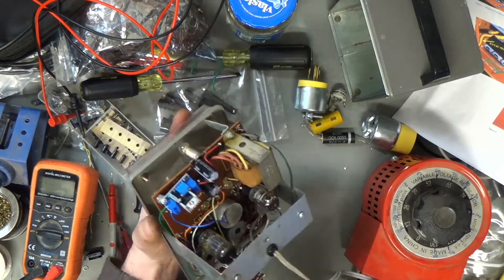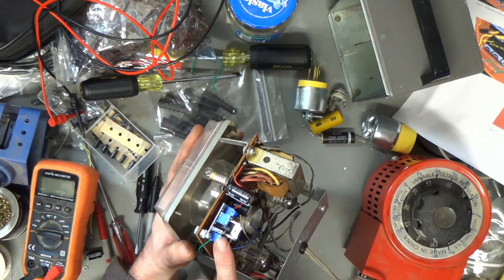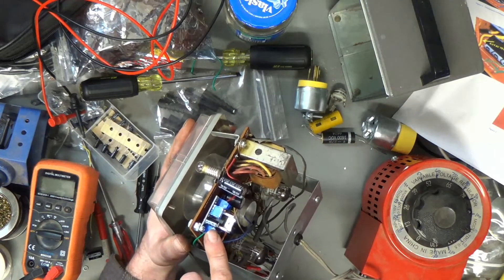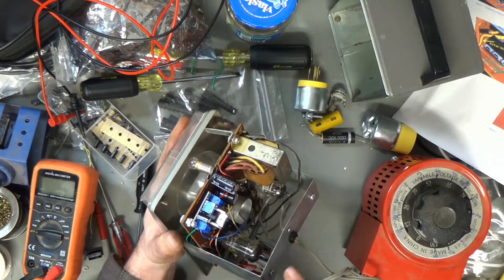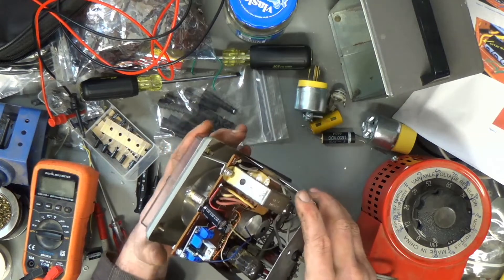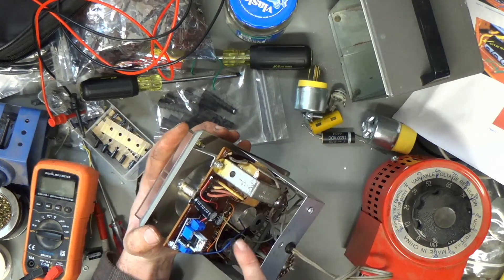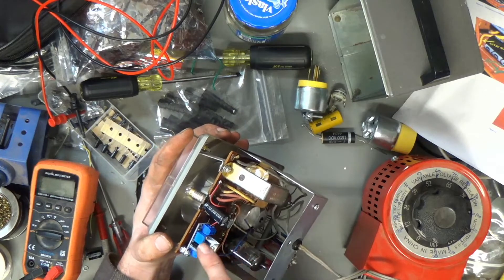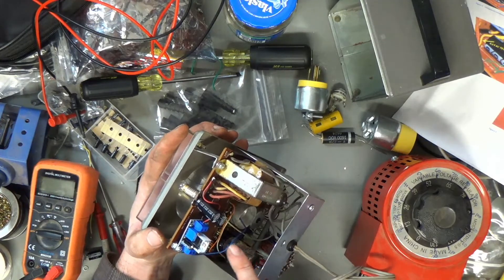So the problem with the ohms measurement ended up being this LM317 voltage regulator here. There was some impedance in the ground somewhere at first, and I think the diode went bad.